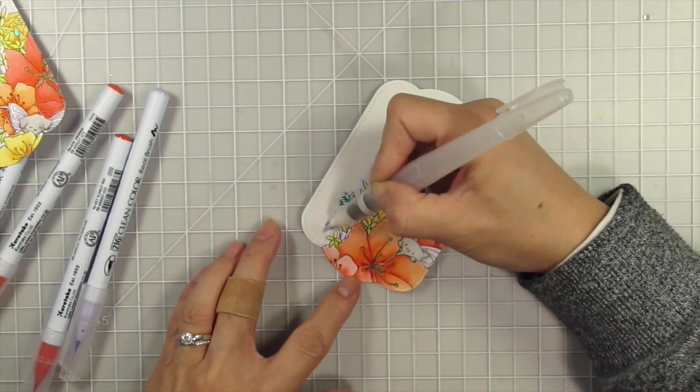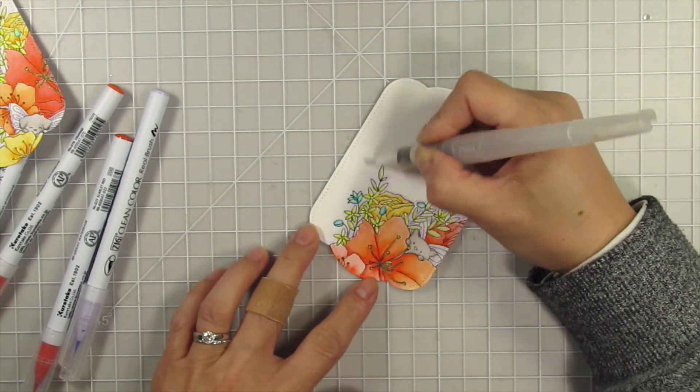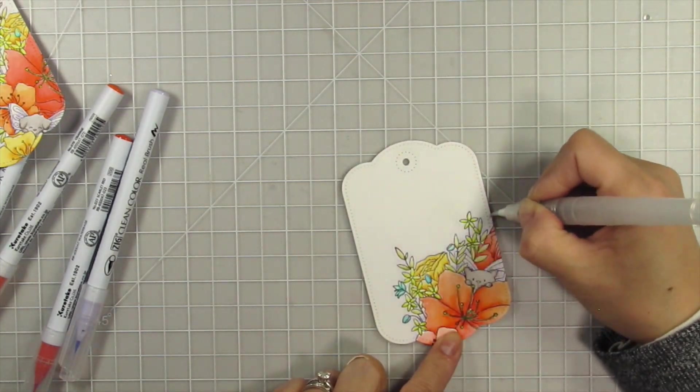After the coloring is done, I go over the edges of the entire image with lavender to create a subtle shadow and also to match the fairy's wings.